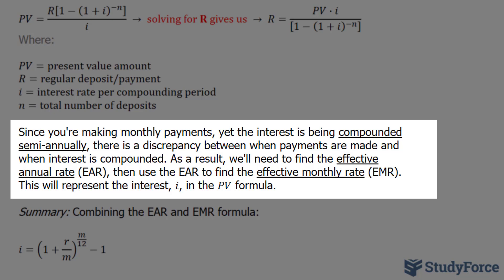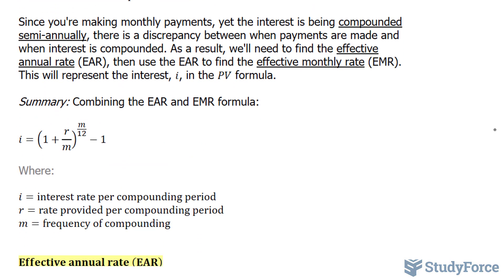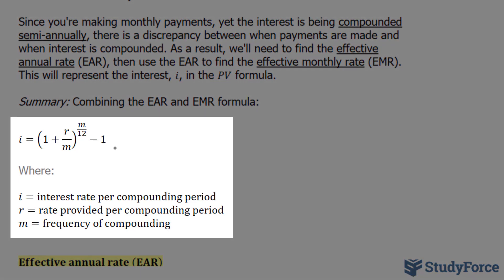And when we find the EMR, which is the effective monthly rate, this will represent the interest, i, for this formula. Now to find the EAR and the EMR, you have to use two separate formulas, but they can be combined into a formula that looks like this. Where i is equal to the interest rate per compounding period, r is equal to the rate provided, and m is the frequency of compounding.